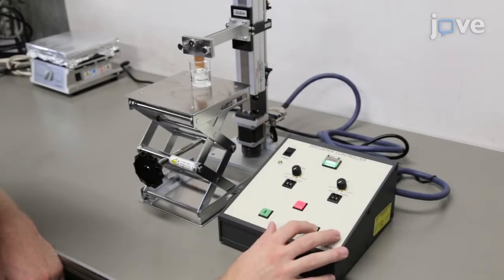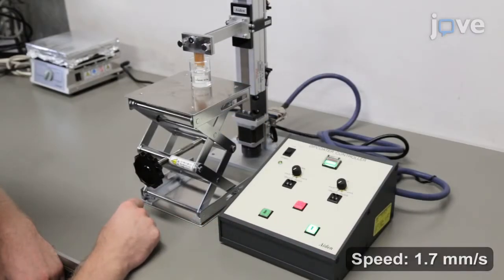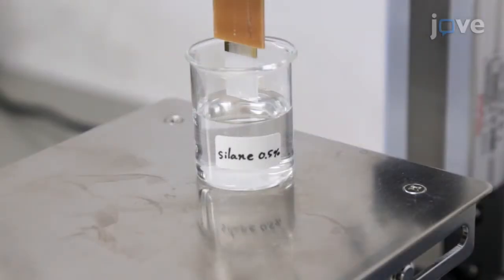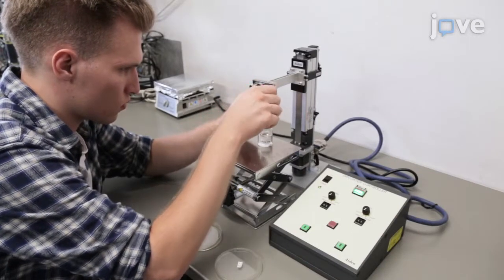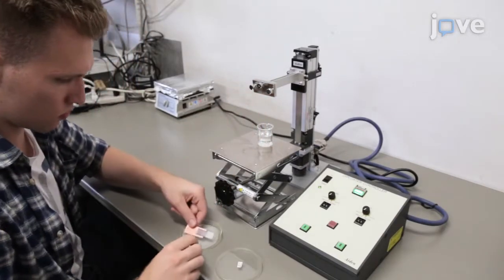Raise the device out of the solution. Keep the device in the air for 5 minutes. Next, remove the device from the dip coater and rinse it in pure water for 1 minute.